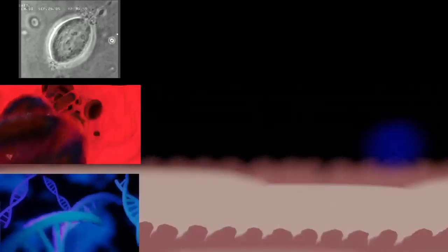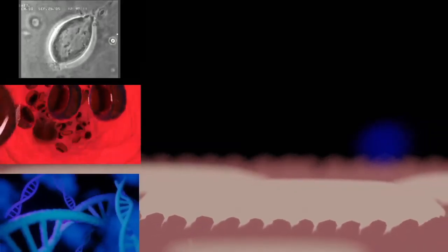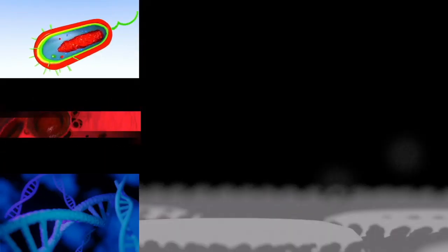Prokaryotic cell structure: Flagellum, not always present. Description: long whip-like protrusion that aids cellular locomotion, used by both gram-positive and gram-negative organisms.